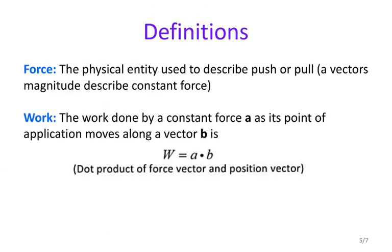The next thing we're going to look at are the types of word problems that you would use the dot product for. This is dealing with work word problems. So let's talk about some definitions. A force is the physical entity used to describe a push or a pull. A vector's magnitude is described as the constant force. Work is the work done by a constant force as its point of application moves along vector B. This right here is a formula that we are going to use. Your work is going to be the dot product of the force vector and the position vector. I actually like to rewrite this formula as F dot P. So that is my force vector and my position vector.